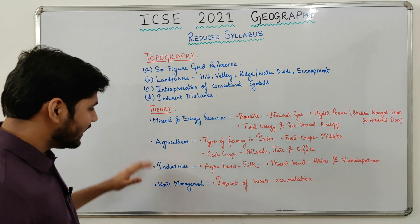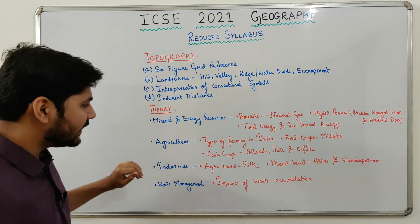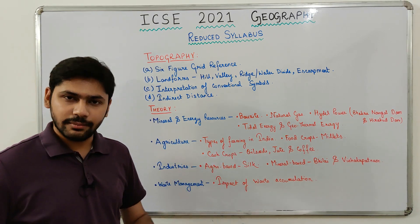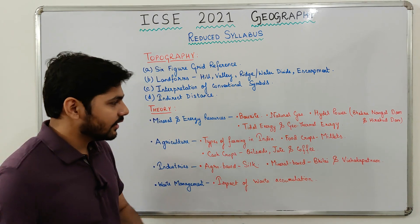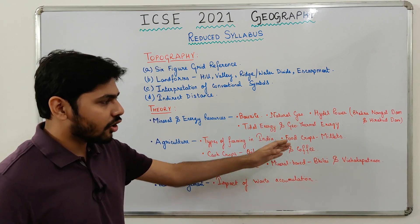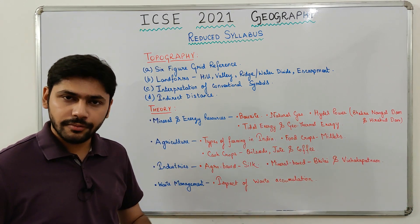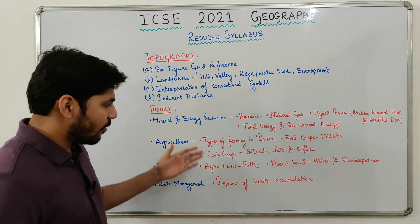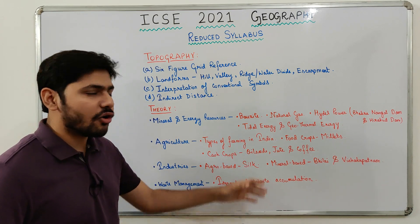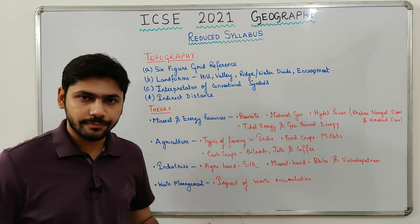Next, agriculture. From agriculture, types of farming in India has been removed. From food crops, millets has been removed. From cash crops, oil seeds, jute, and coffee have been removed.